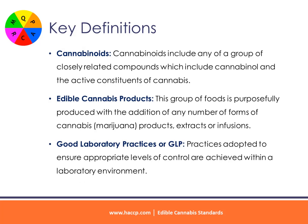Cannabinoids: include any of a group of closely related compounds which include cannabinol and the active constituents of cannabis. Edible cannabis products: this group of foods is purposefully produced with the addition of any number of forms of cannabis, marijuana products, extracts, or infusions.